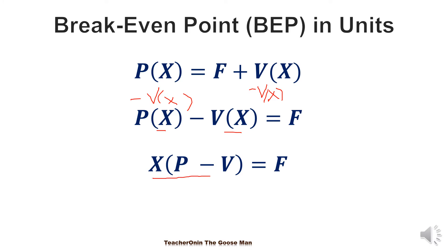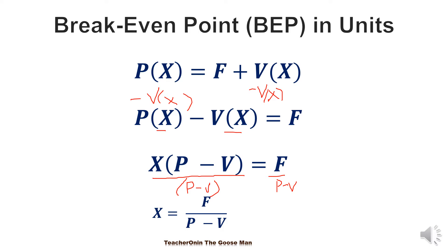I would like to look for the value of X, so divide both sides by P minus B. So I have now X is equal to fixed cost divided by price per unit minus the variable cost, or X is equal to F divided by P minus B.